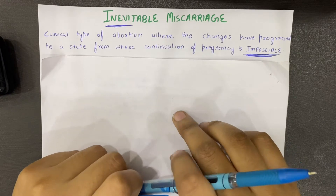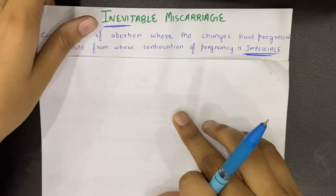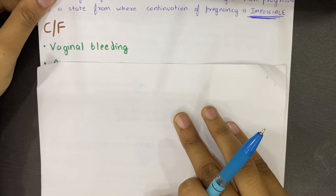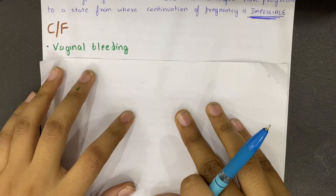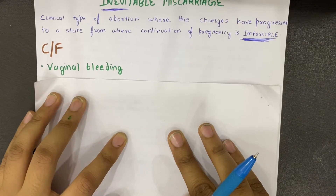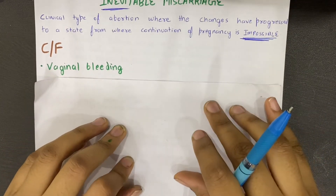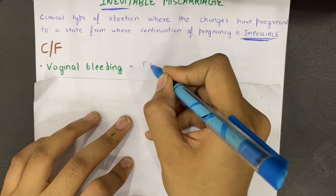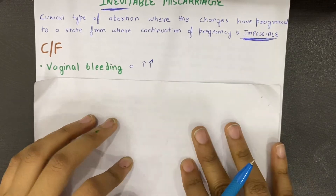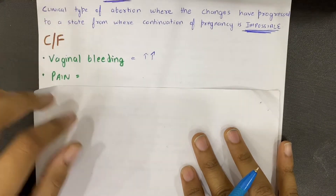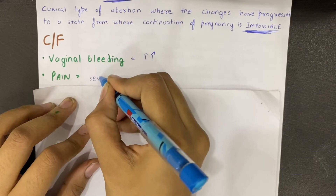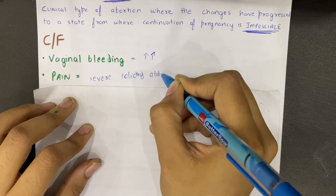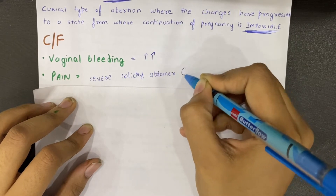The next topic is clinical features. The first and most important clinical feature is vaginal bleeding, which is again the characteristic feature. There is a large amount of bleeding compared to threatened miscarriage. The pain is also of severe type — severe colicky abdominal pain, specifically in the lower abdomen.